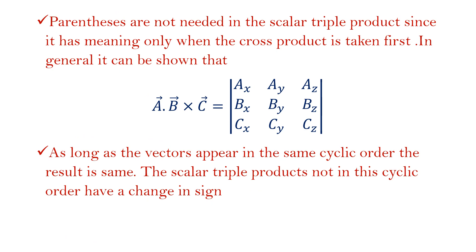Parentheses are not needed in the scalar triple product since it has meaning only when the cross product is taken first. In general, A dot (B cross C) can be written as the determinant with rows ax, ay, az; Bx, By, Bz; Cx, Cy, Cz. As long as the vectors appear in the same cyclic order, the result is the same. But if the cyclic order is changed, the result has the same magnitude but opposite sign.